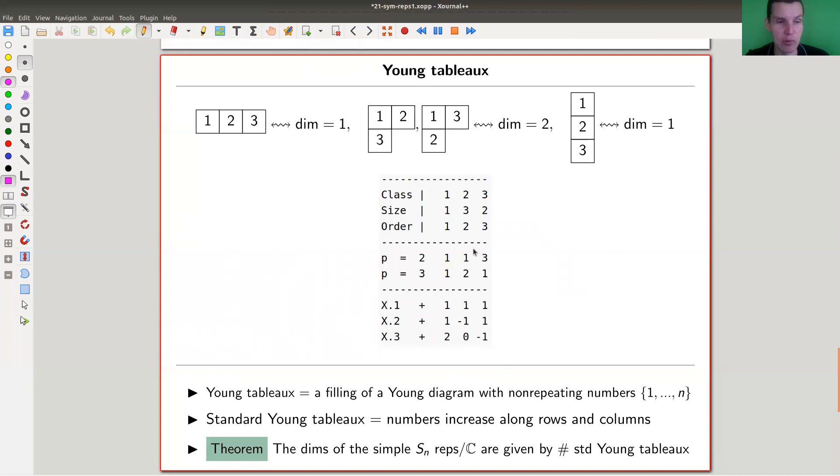So for each one of those Young diagrams, there is a simple representation, and you can encode them nicely, the dimensions nicely, in the Young diagrams itself, by what is called the Young tableau. So here, for example, this is the case of S_3. So you have three boxes here in my character table, we see the dimensions, which is one, one, two.